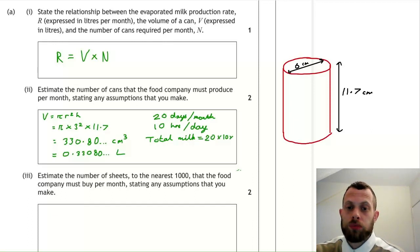And then we can work out the total milk production. So we multiply the number of hours in one month which it's in production, 20 times 10, and then multiply by the hourly production, the 1,600. So in one month, we work out it is 320,000 liters.